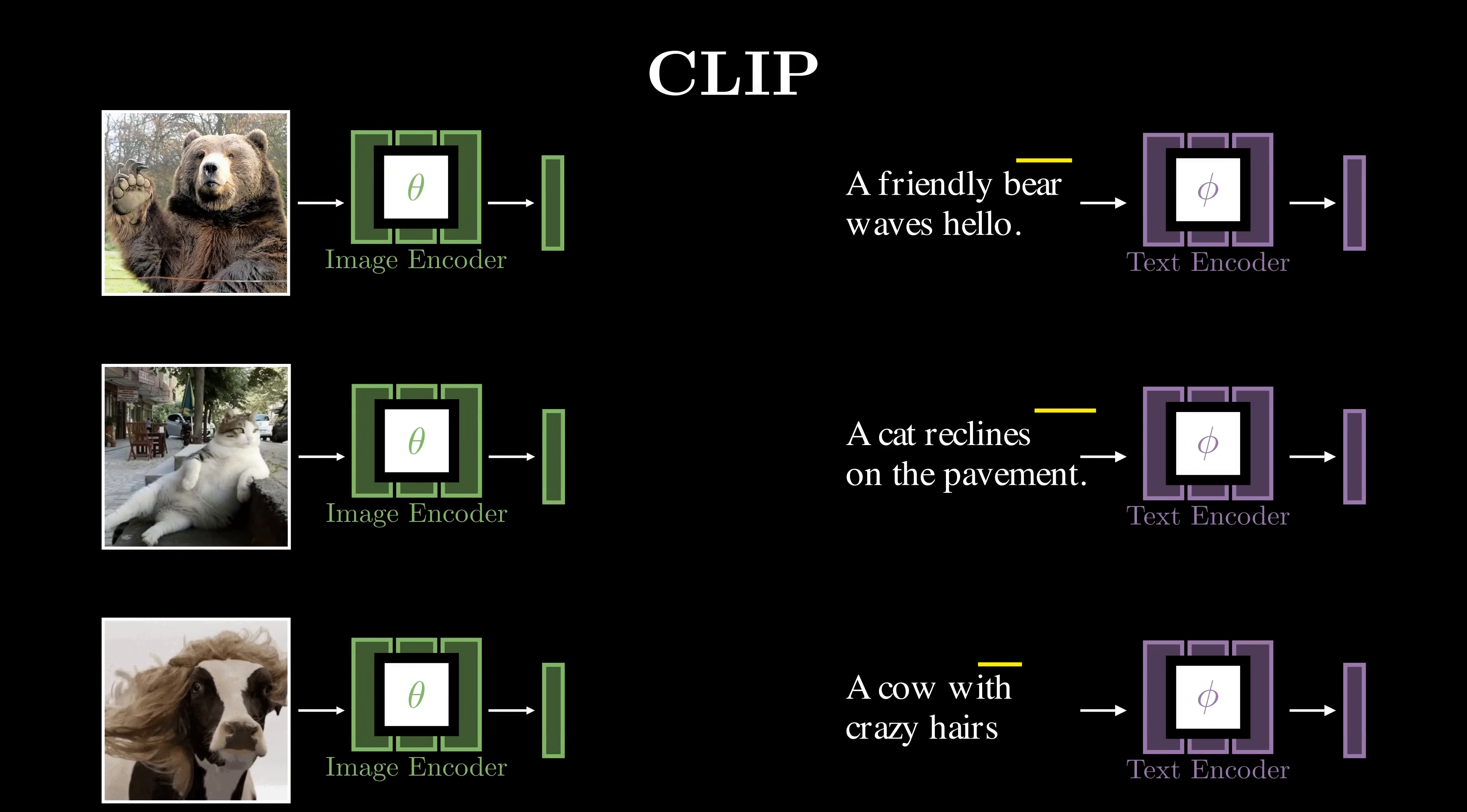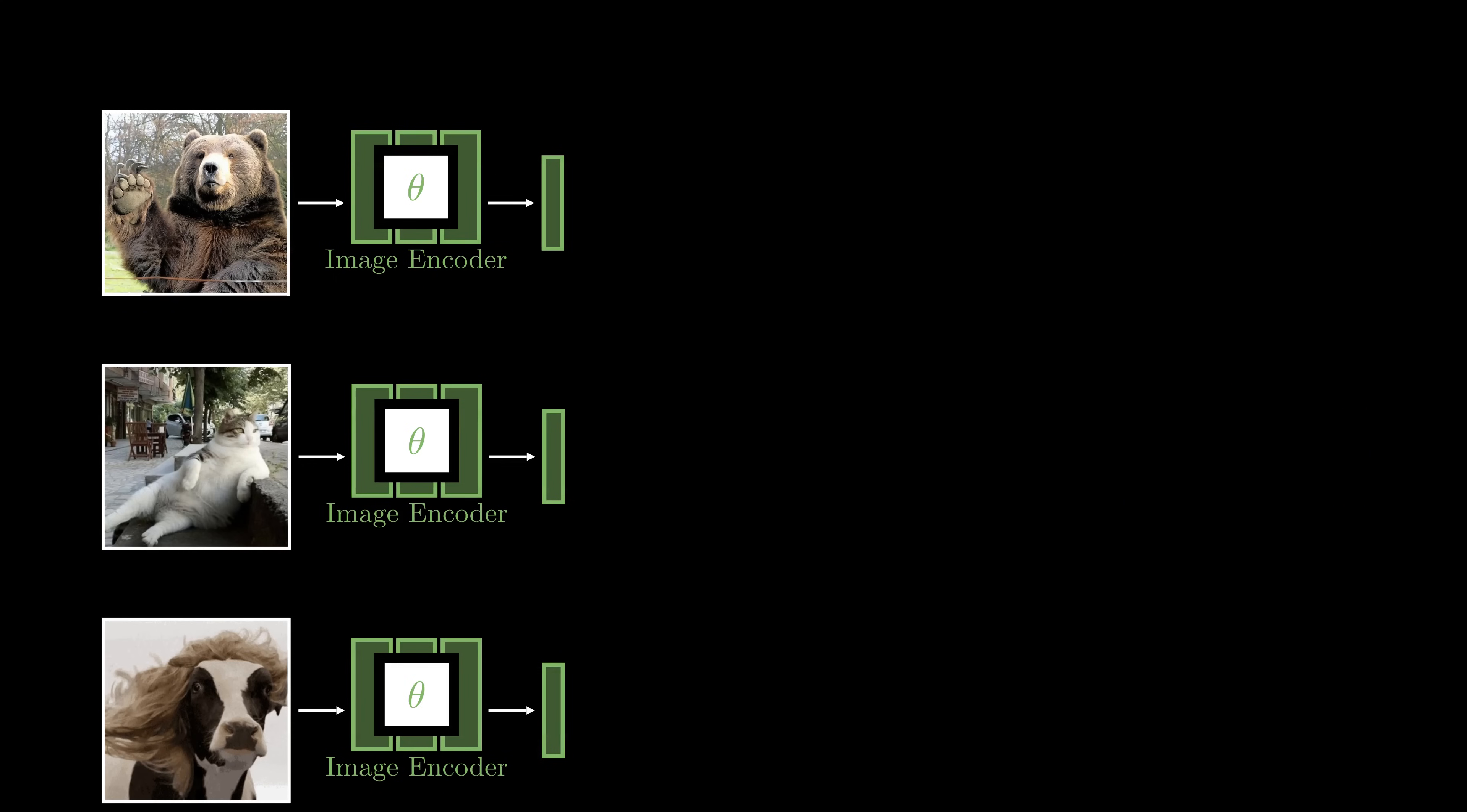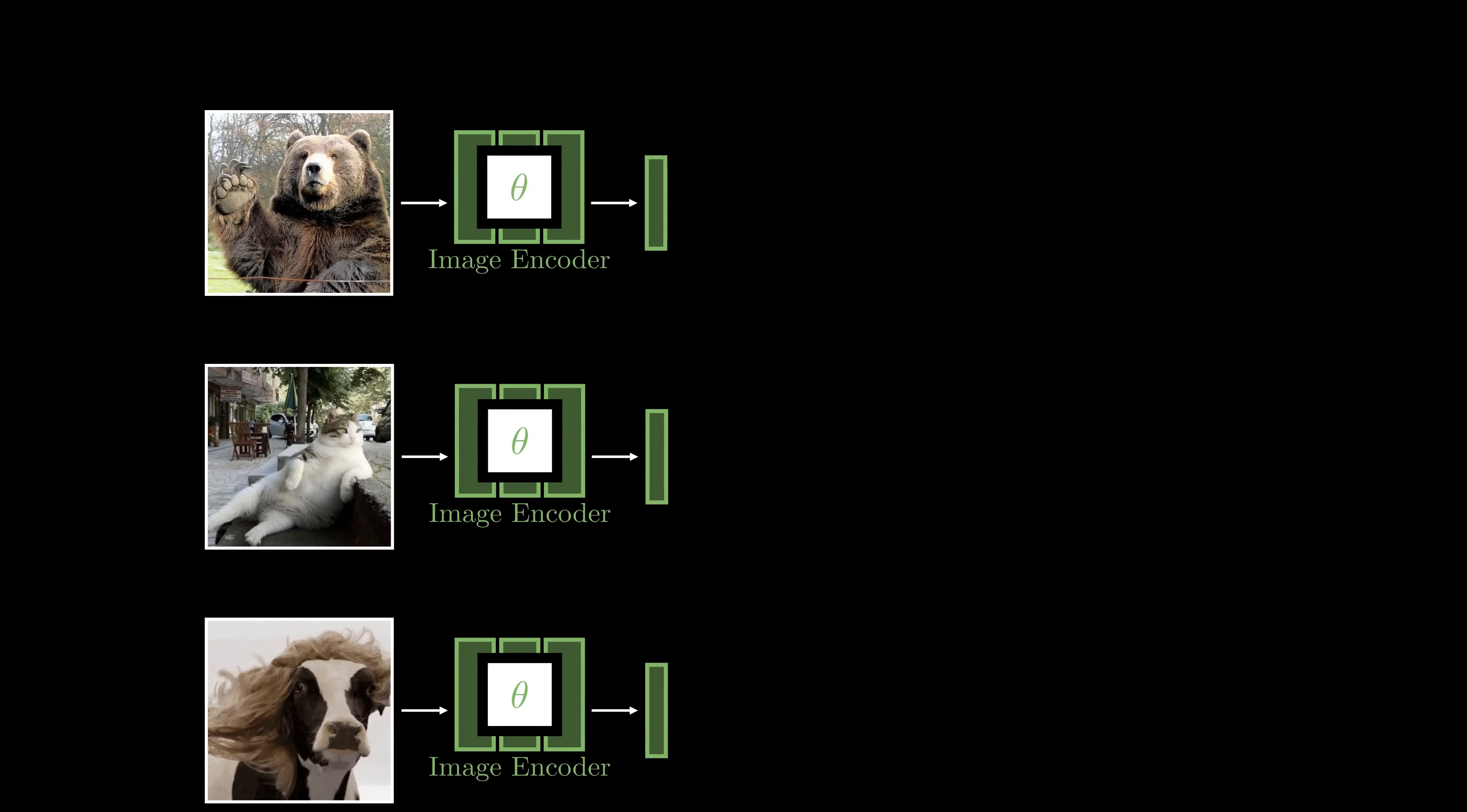But this type of training is expensive because it requires human annotation for every image. Can we train our image encoder without any labels, using only images? If we can achieve this, we can leverage the enormous amount of unlabeled images already available to train our models at scale. This is the goal of self-supervised learning.